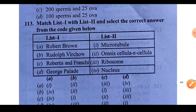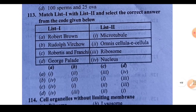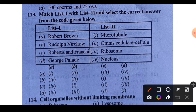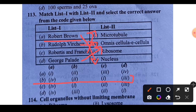Question 113: Match the following — who discovered what? Robert Brown discovered the nucleus (A→4). Rudolph Virchow: omnis cellula e cellula (B→2). Robertis and Frenchy: microtubule. George Palade: ribosome. So A is 4th and B is second. Option B is the right answer.